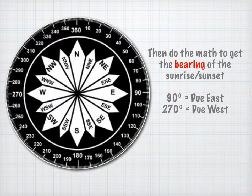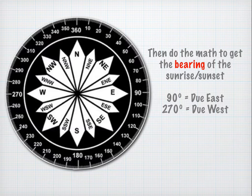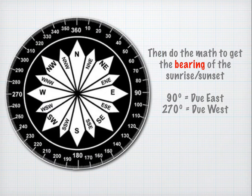Then you're going to convert this angle to a bearing. A bearing simply means you take 360 degrees and place it onto a compass rose. 90 degrees is due east and 270 degrees is due west.